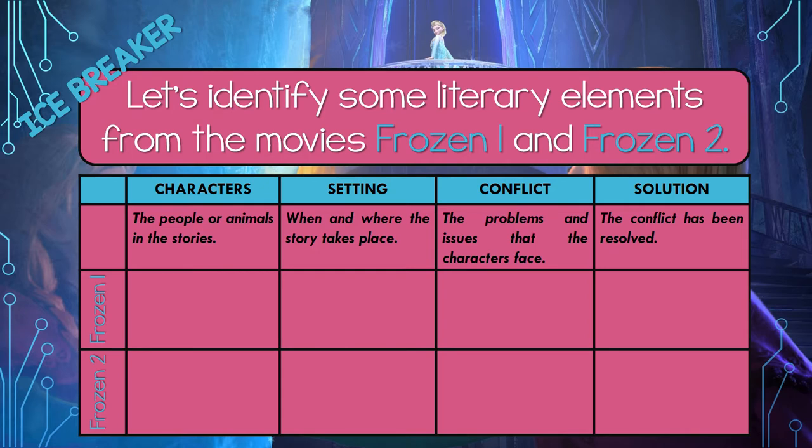How about the conflict? Remember, the conflict is the problem. The conflict in Frozen 1 is Anna is trying to help her sister find herself, and Arendelle is being taken over by the evil Prince Hans. The conflict in Frozen 2 is the sisters were trying to find some answers about their people. The solution in Frozen 1 is Anna and Elsa were able to save their town and their people. And in Frozen 2, they were able to get all of the answers that they needed about their past.